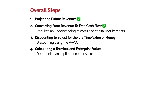In our last video, we talked about projecting future revenues and converting from revenue to free cash flow. This requires an understanding of cost and capital requirements, as you're going to have to model out changes in net working capital, capital expenditures, and finish out your build of the income statement. In the video before that, we looked at the key building blocks and conceptual ideas behind the weighted average cost of capital and discounting. Now we want to discount and apply that WACC in our Excel model in order to figure out our terminal and enterprise values for our company.